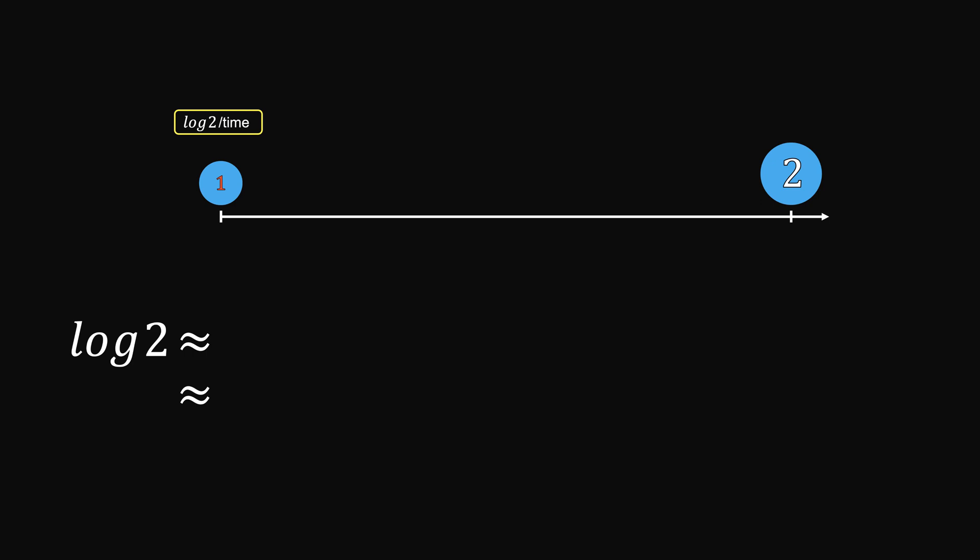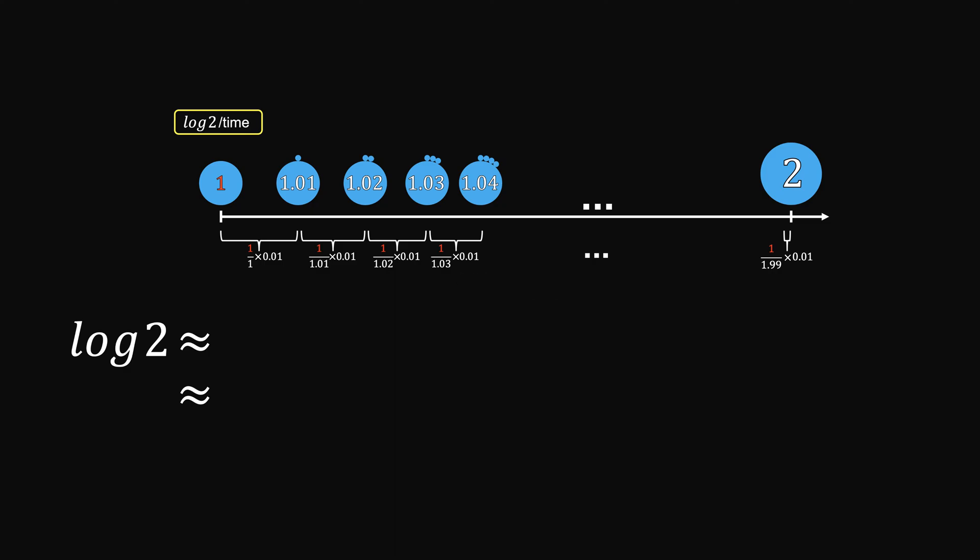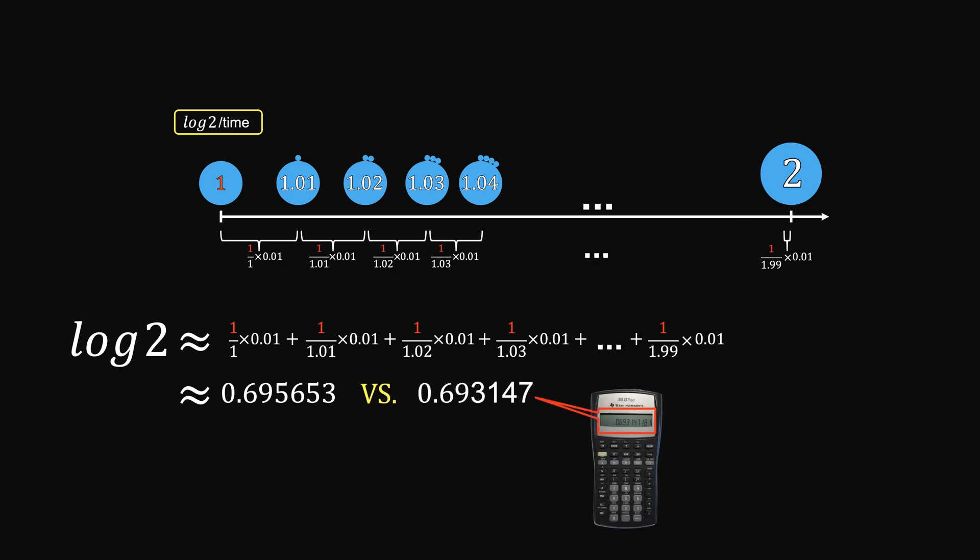Now let's make it more precise by considering 100 growth steps. So each step, we consider 1% increase, and see how much comes from the mother cell. So we have the whole 1%. For the next growth, 1 over 1.01 of it, 1 over 1.02 of it, 1 over 1.03 of it, all the way to 1 over 1.99, because we consider 100 steps. Now summing them up, we get a more accurate answer, 0.695653. It's pretty similar to what you get using the calculator.